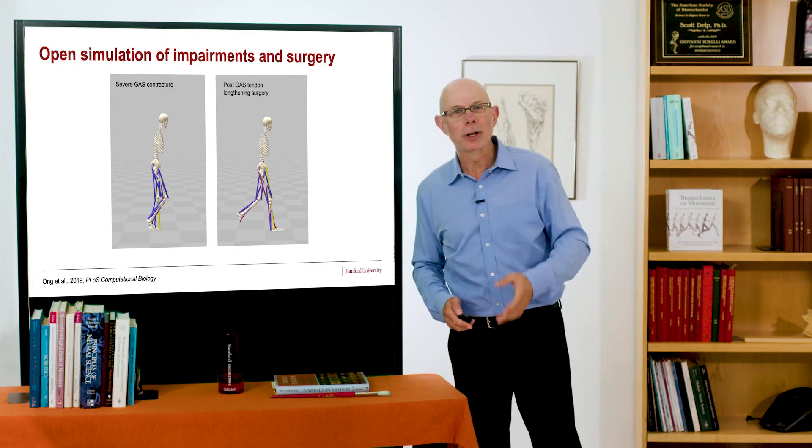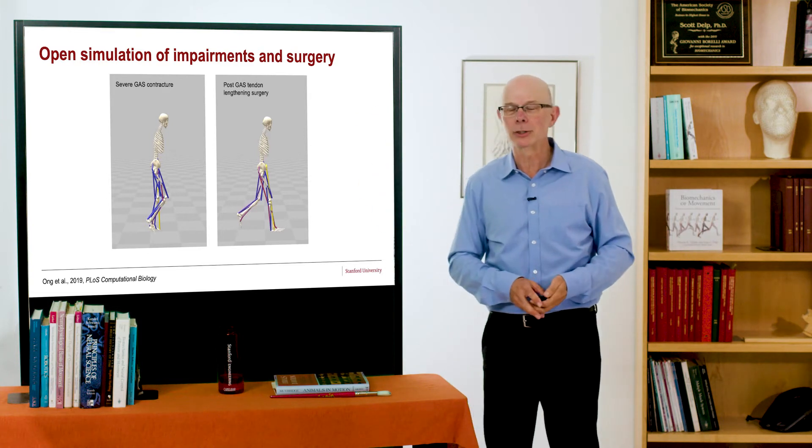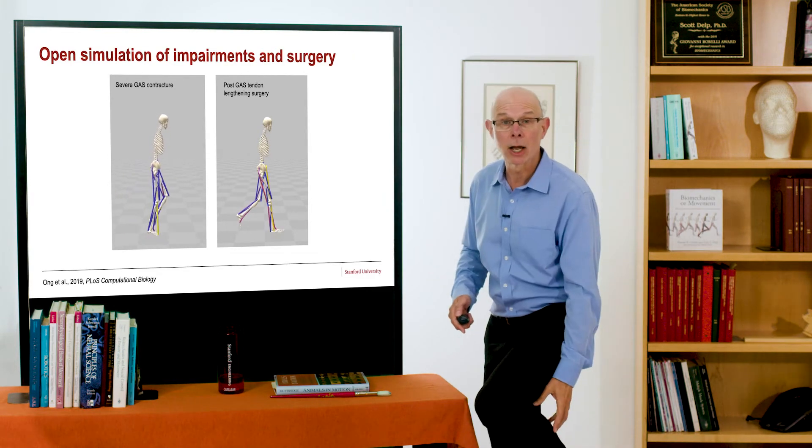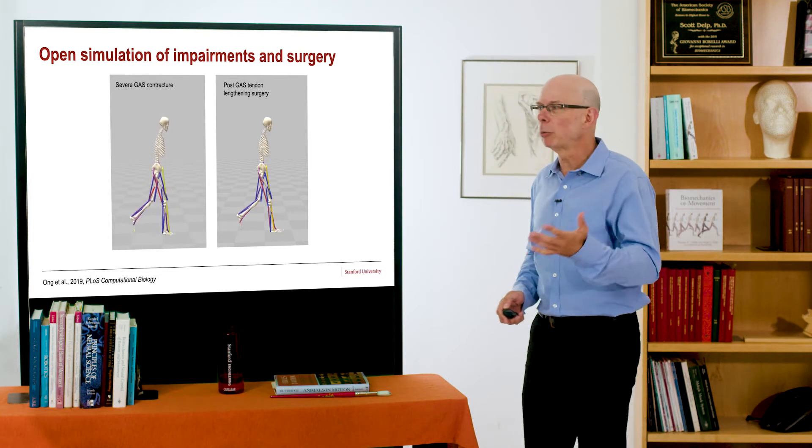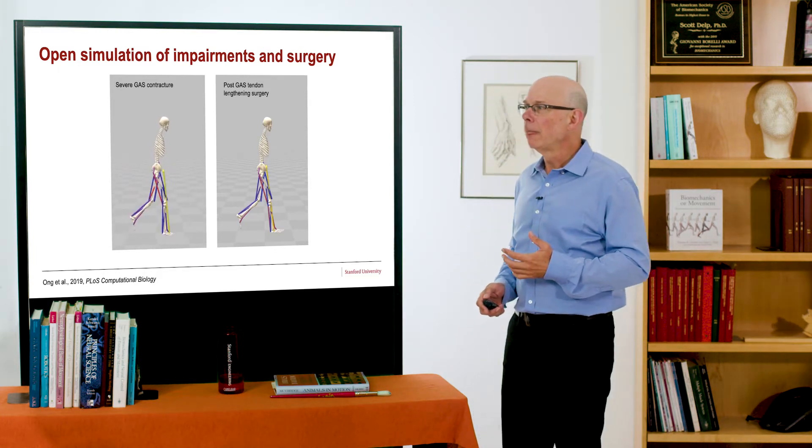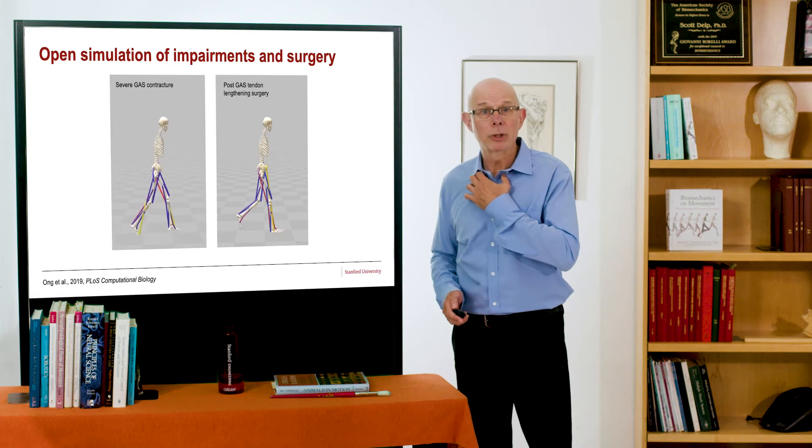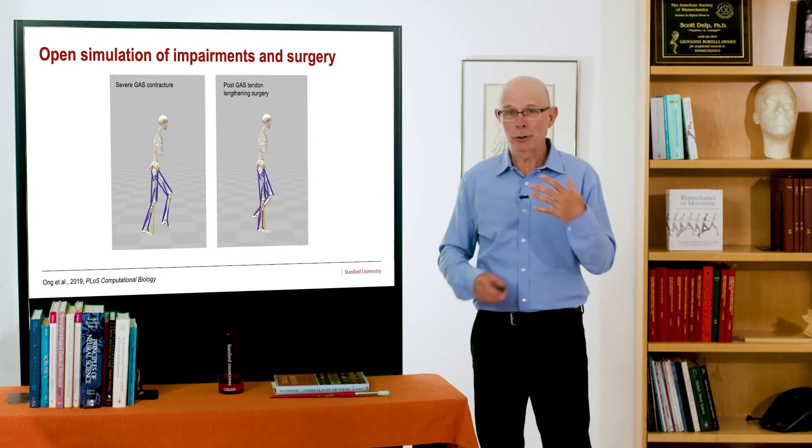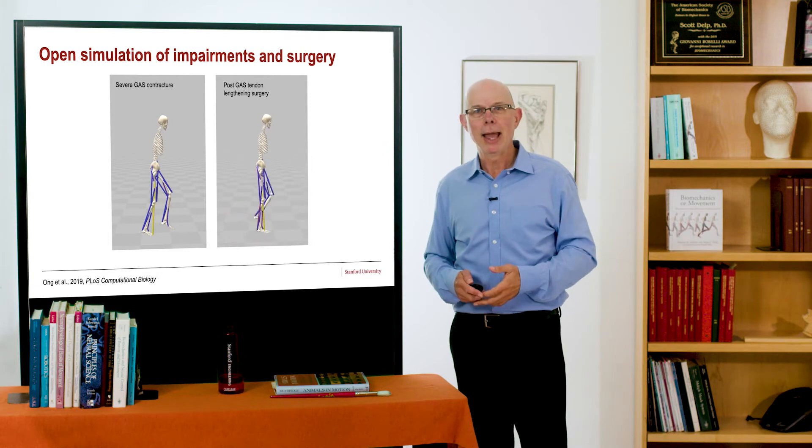One thing I've always wanted to do was done by Carmichael Ong, and that is to simulate impairments and to simulate surgery. So in this first simulation, Carmichael simulated a contracture, a tightening, a shortening of the muscle fibers of the gastrocnemius. He used an optimal controller to predict what the gait would be. You could see the individual walking on their toes. He then wanted to see, well, what if I went in and performed a gastrocnemius lengthening surgery? What would the gait look like? And here's the gait post-simulated surgery. Now there's lots of assumptions made here, but these kinds of simulations are quite powerful and can be done in OpenSim.